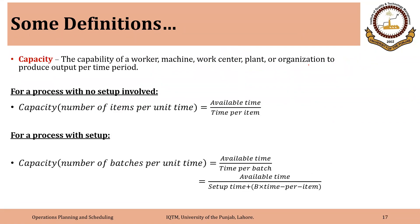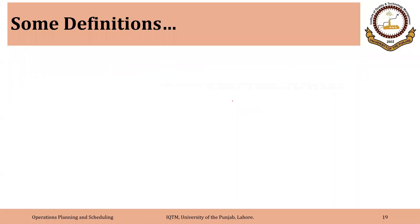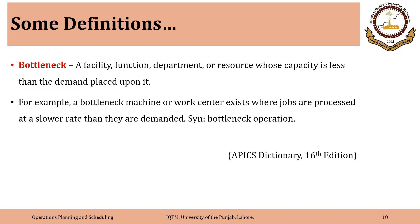We have discussed the formulas mentioned here. Capacity is the capability of a worker, machine, work center, plant, or organization to produce output per time period. For a process with no setup, capacity equals available time over time per item; for a process with setup, it equals available time divided by time per batch. Today we focus on the formula with no setup. The bottleneck is the process with the lowest capacity — the slowest process in the system or in a series of processes.